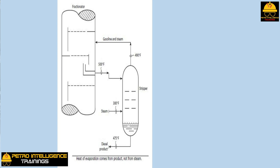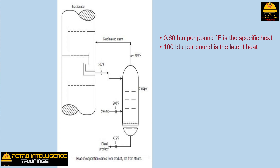A steam stripper works in the same way. The diesel oil product drawn from the fractionator column is contaminated with gasoline. The stripping steam mixes with the diesel oil product on the trays inside the stripper tower. The steam reduces the hydrocarbon partial pressure and thus allows more gasoline to vaporize and escape from the liquid phase into the vapor phase. The heat of vaporization of the gasoline cannot come from the steam, because the steam at 300 degrees Fahrenheit is colder than the diesel oil at 500 degrees Fahrenheit. The heat of vaporization must come from the diesel oil product itself.